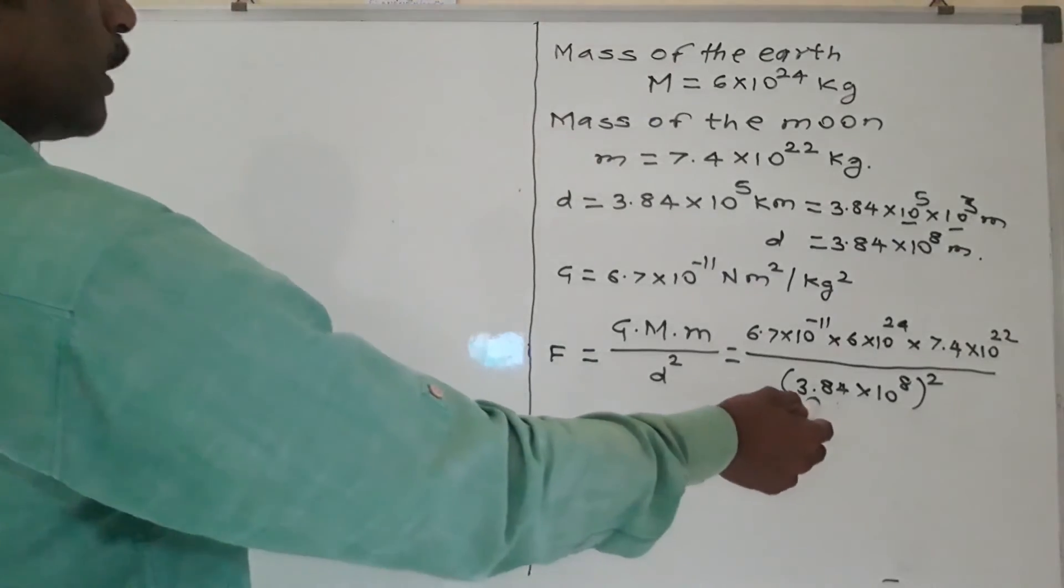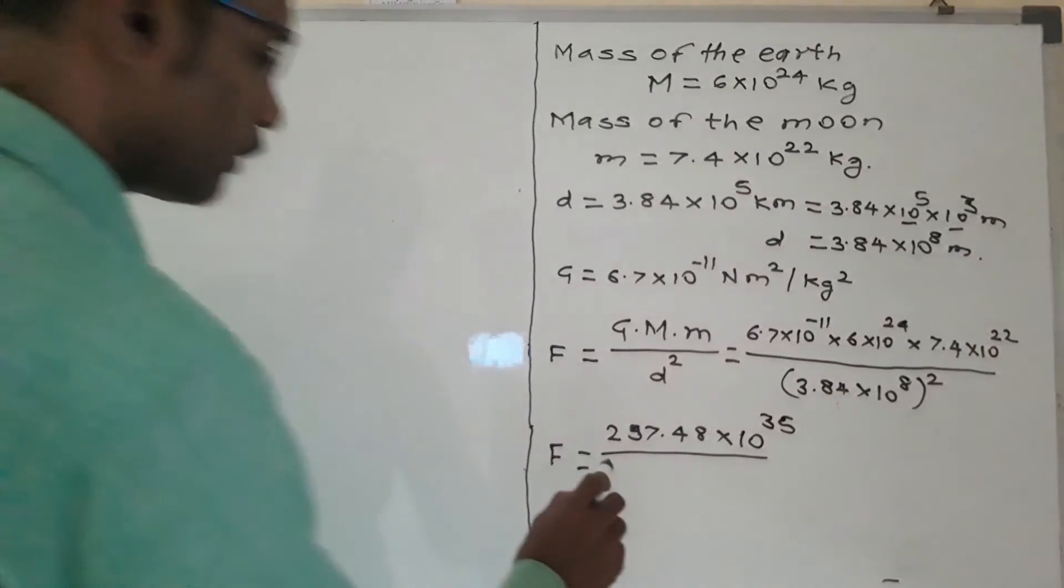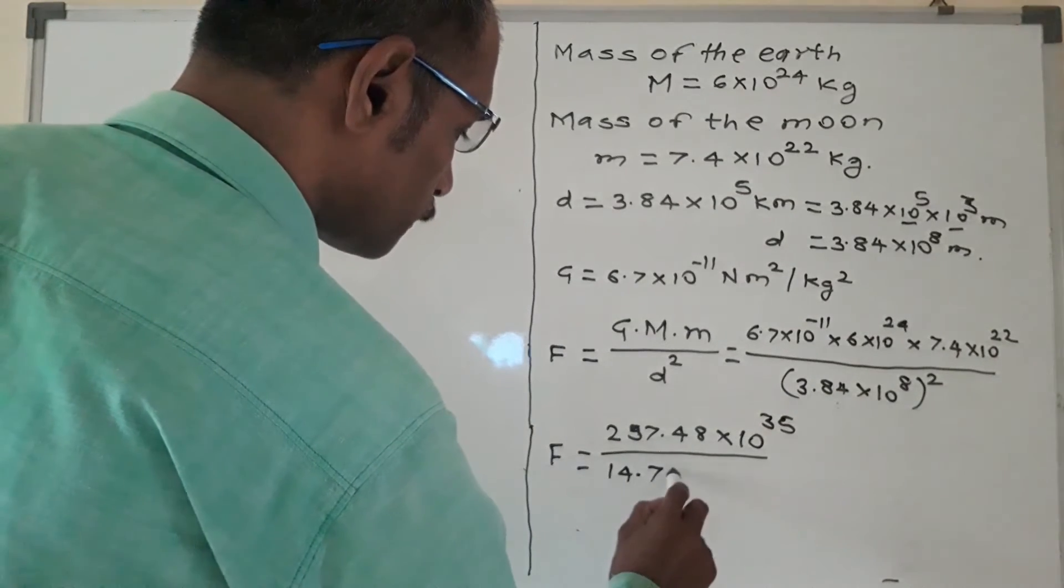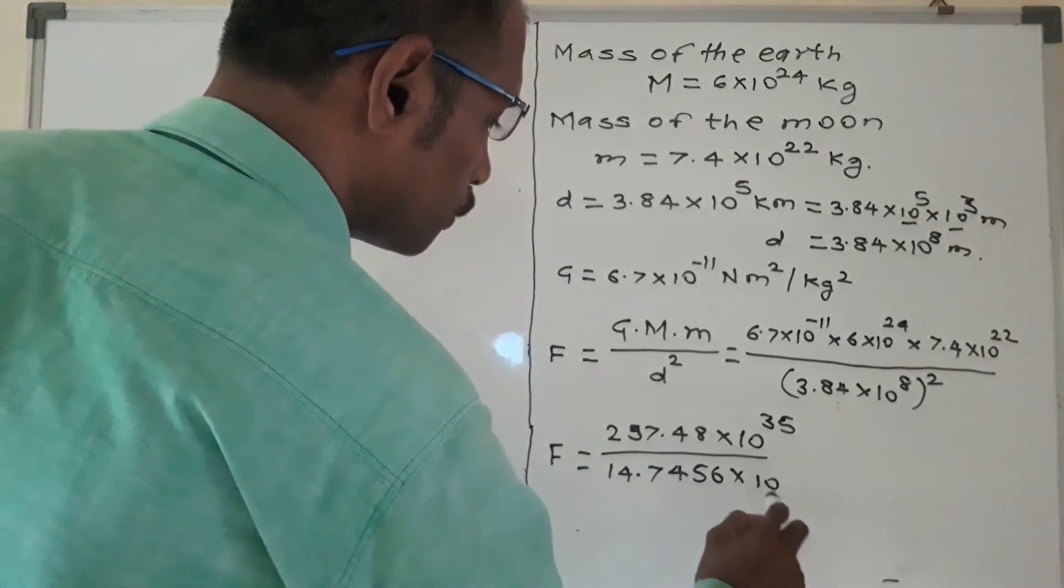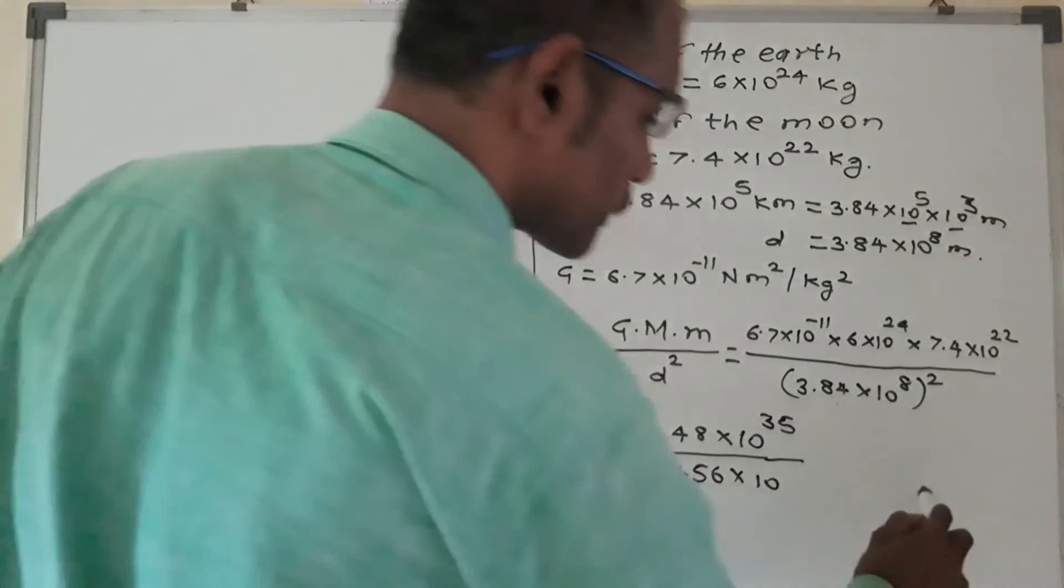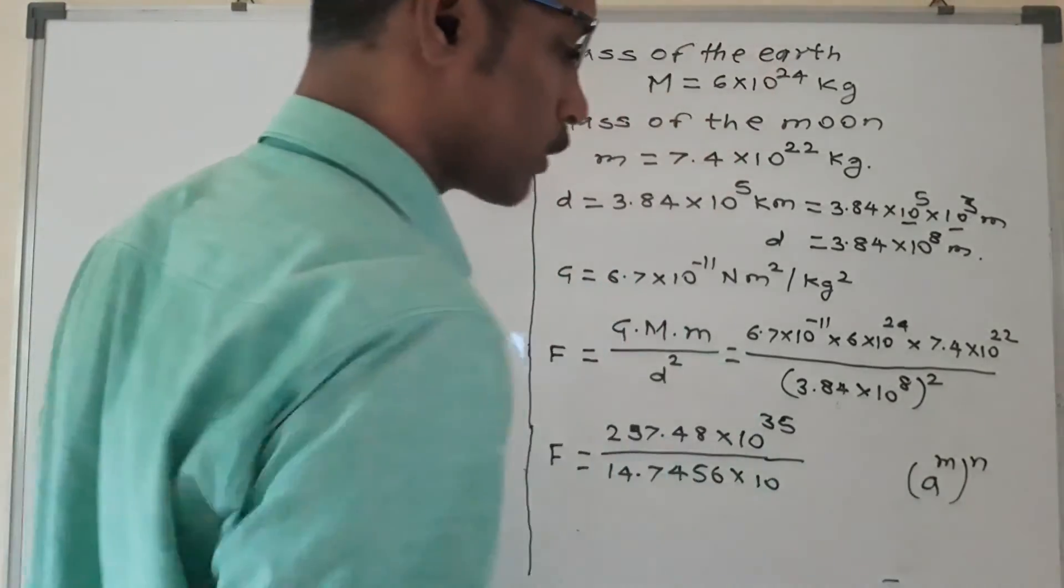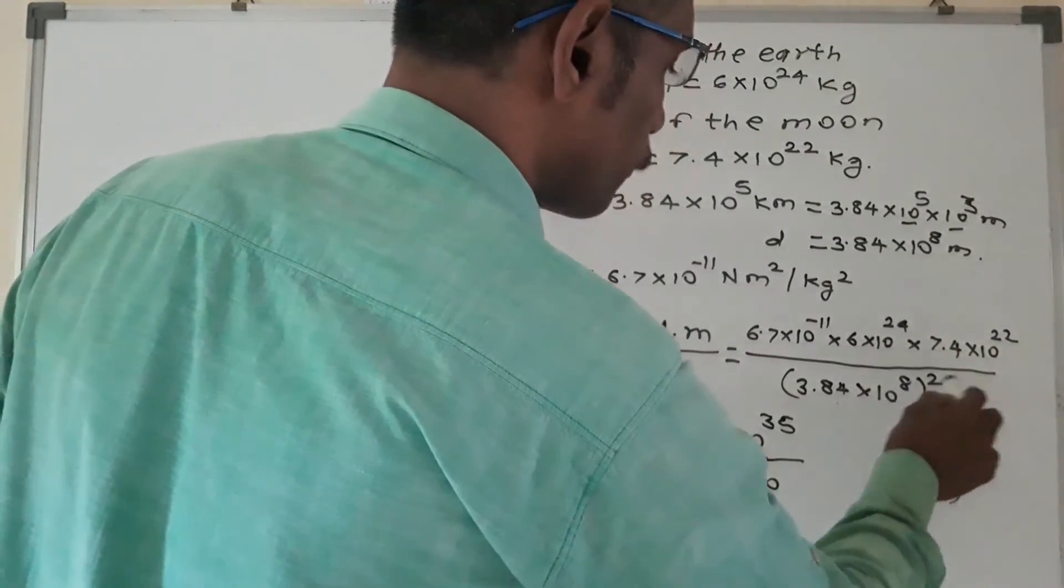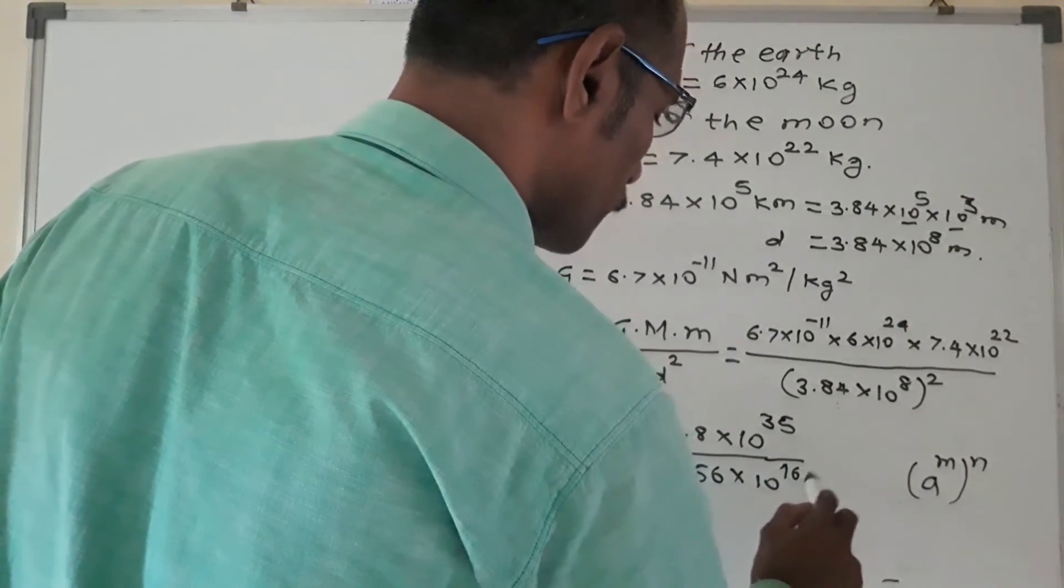Square of 3.84 is 14.7456 into - here laws of indices, a raise to m raise to n - now we use this law of indices. Same way here, 10 raise to 8 into 2 is 10 raise to 16.